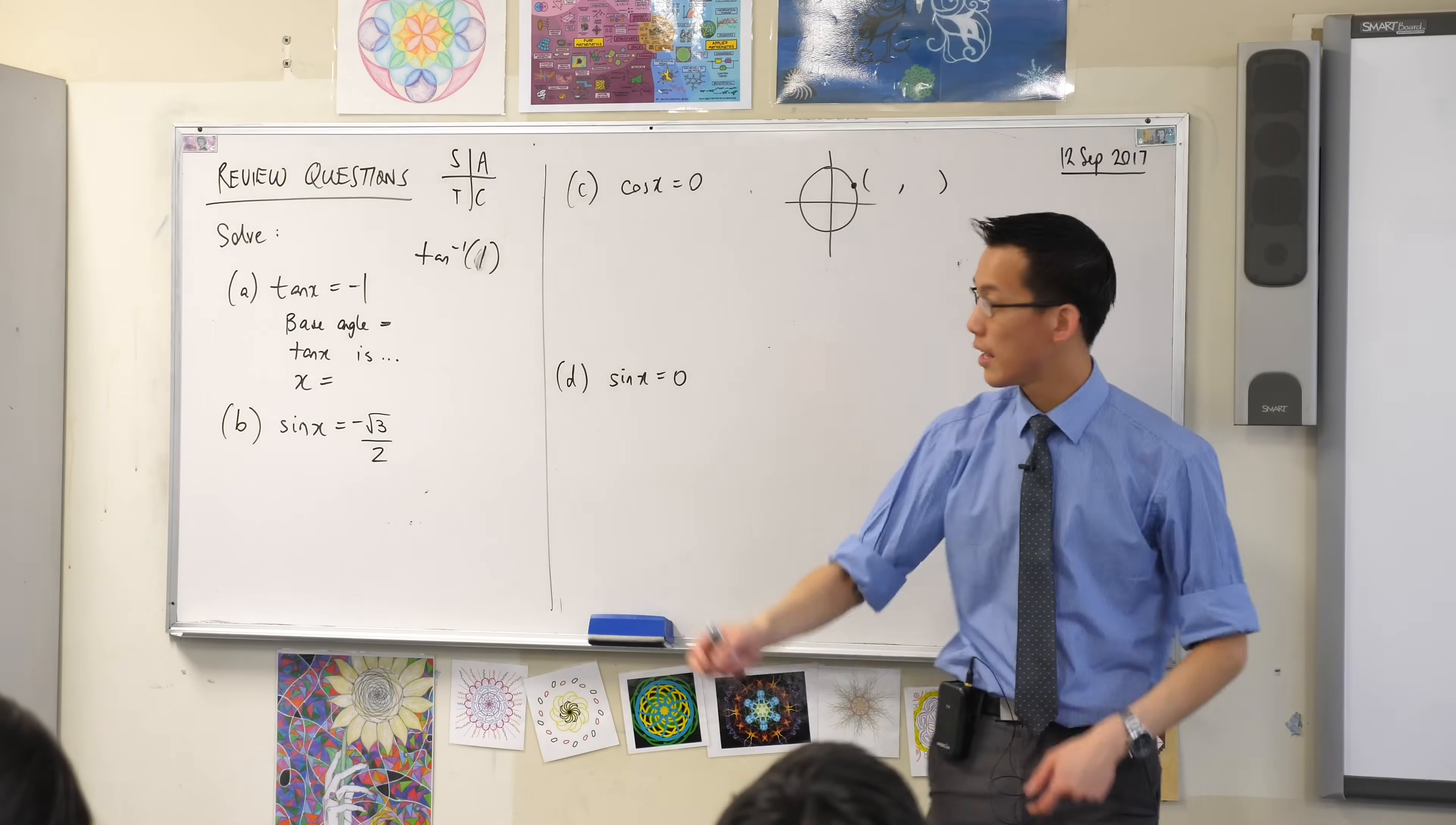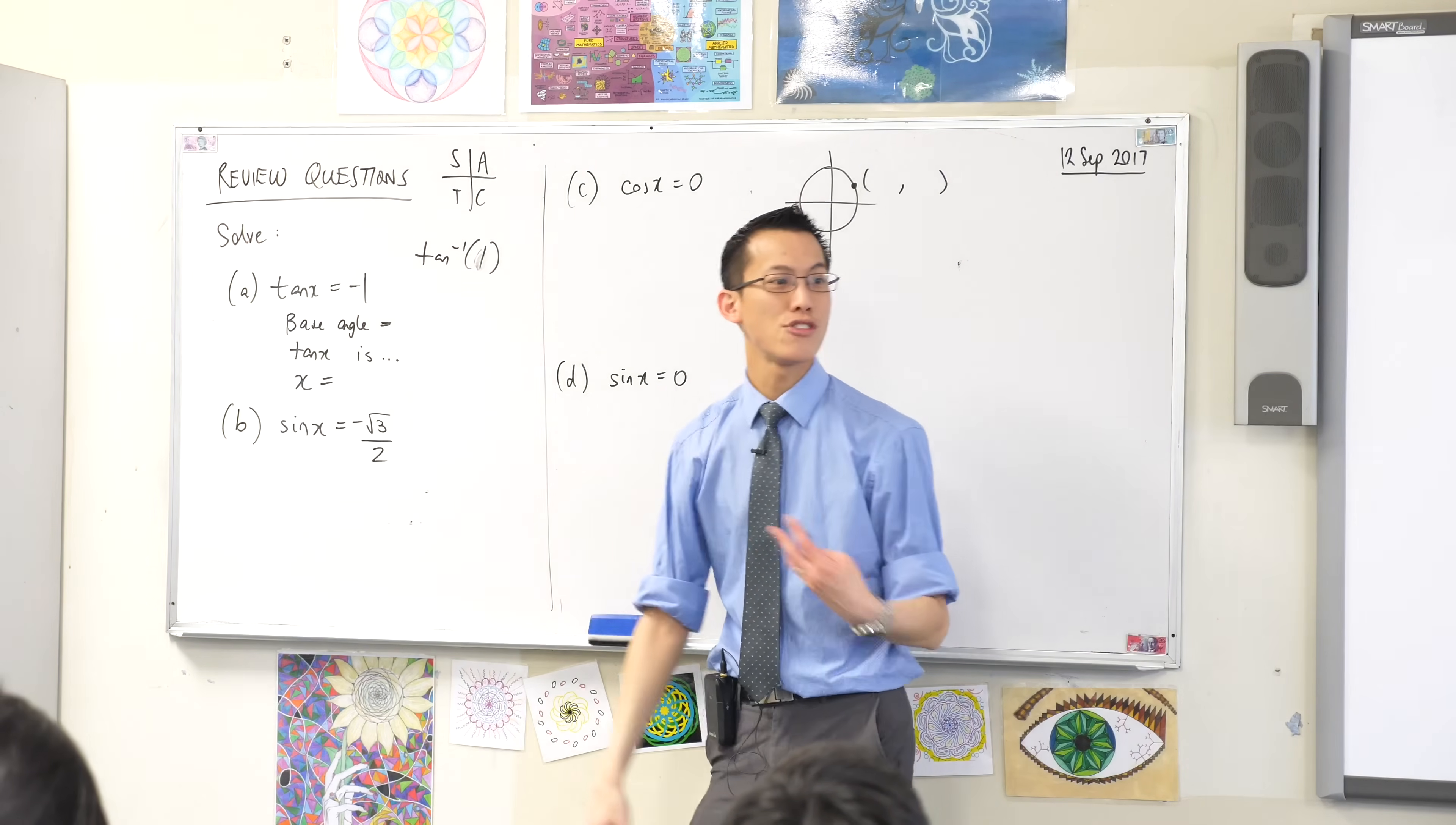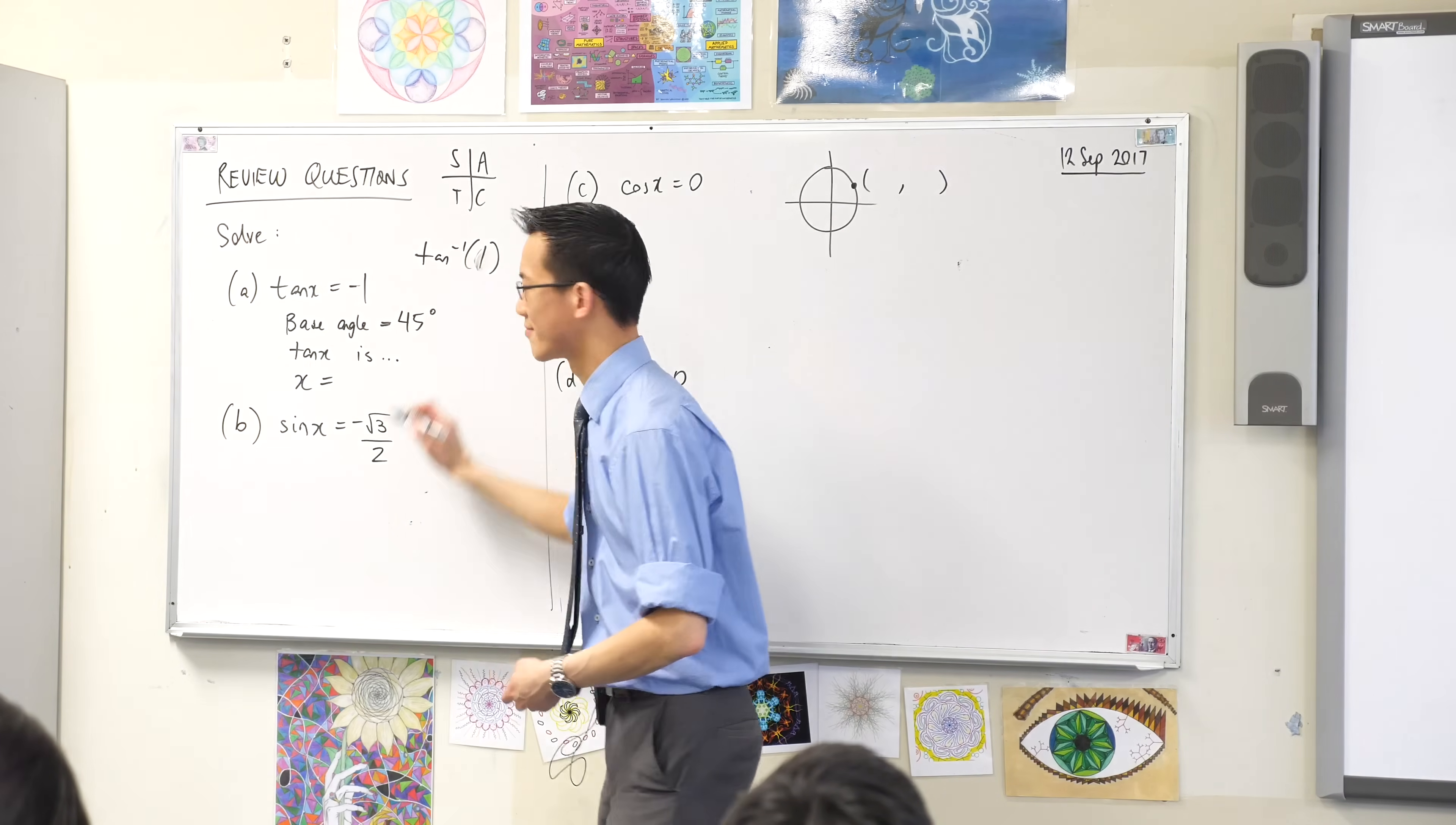So you go shift, tan, you pop in this value here without the plus or minus and you get what angle? What is that? Why don't you put in the minus?